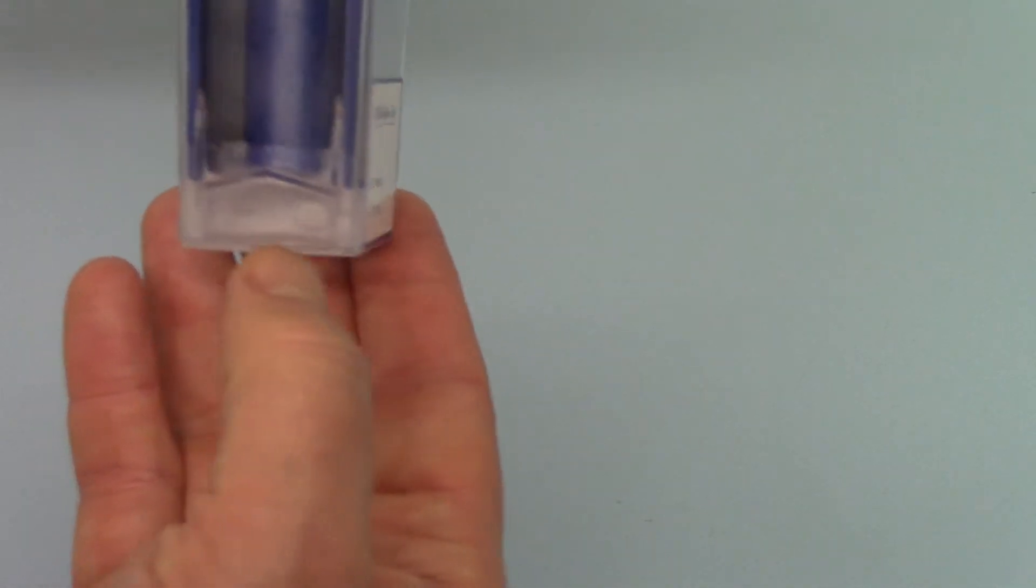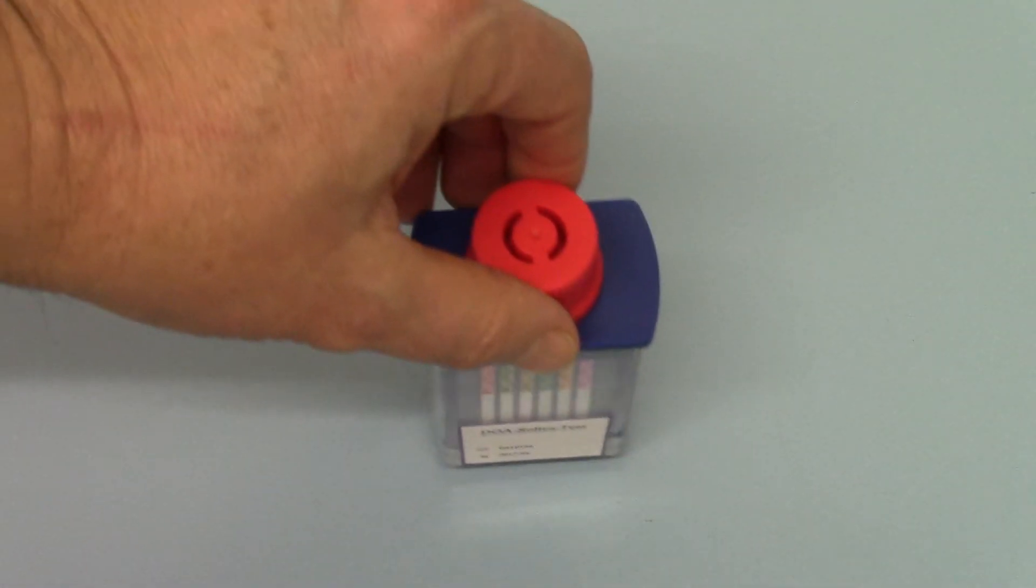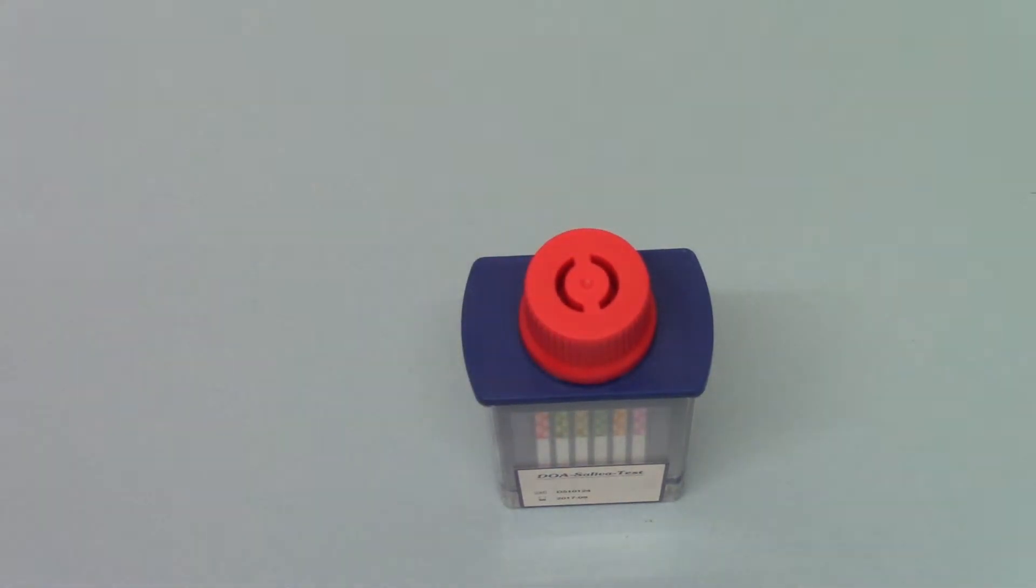The test should then be placed in a vertical position and left to run. Once you assemble the test and discharge the sponge, start your timer. You're looking to read the results between five and ten minutes. Within a couple of minutes, you'll see the pink dye starting to run.